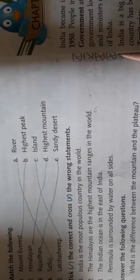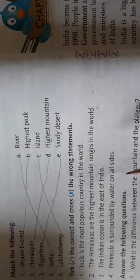Number 4: Peninsula is surrounded by water on all sides. No. It's surrounded by 3 sides, not 4. Cross here.